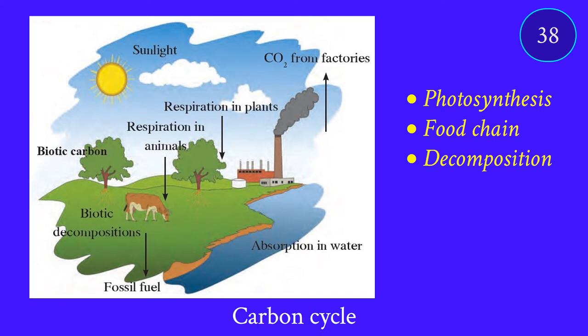The main steps in the carbon cycle are photosynthesis, the passing of carbon through the food chain, decomposition — which is the way carbon is returned to the atmosphere — and burning from factories and other sources.